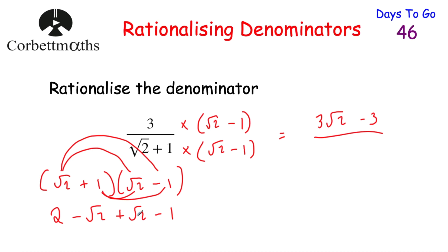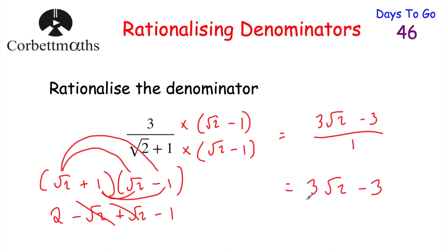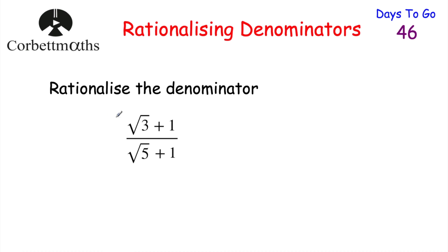The minus root 2 and plus root 2 cancel out to zero, and we're left with 2 take away 1, which is 1. So the denominator is 1, and dividing by 1 leaves us with 3√2 minus 3. We've rationalized the denominator, and our final answer is 3√2 minus 3.